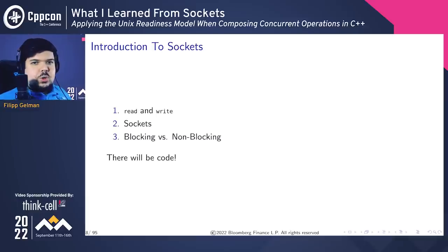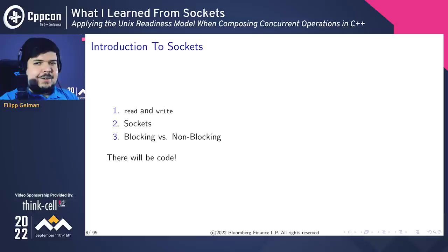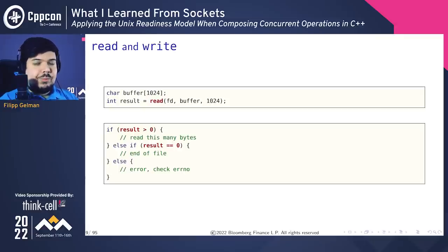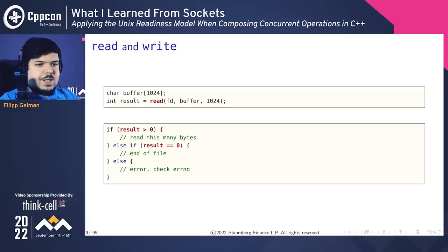So first, I'd like to do a little introduction to sockets — we'll talk about reading and writing, what makes sockets different, and blocking versus non-blocking. Reading and writing is a basic protocol for transferring data. The thing I want to draw attention to is the return: read returns an integer, and that integer can have several meanings. If it's greater than zero, it represents how many bytes of data we read. If it is equal to zero, that's the end of file — no more data after this. Otherwise, there's some error and we better check errno.